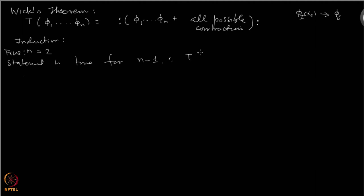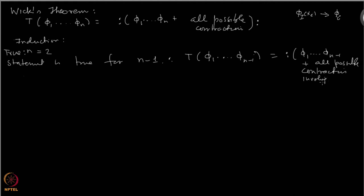We are assuming that the theorem is true for n minus 1 fields — that is, the time-ordered product of n minus 1 fields equals the normal-ordered product plus all possible contractions. Now, for the n-field case, let us assume that x₁⁰ is the largest time component, x₂⁰ is the second largest, and xₙ⁰ is the smallest.